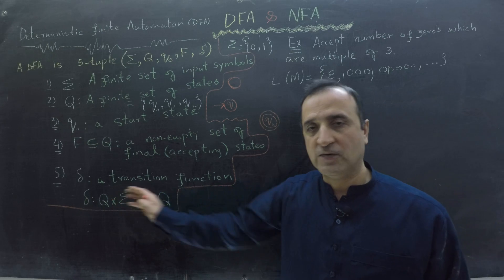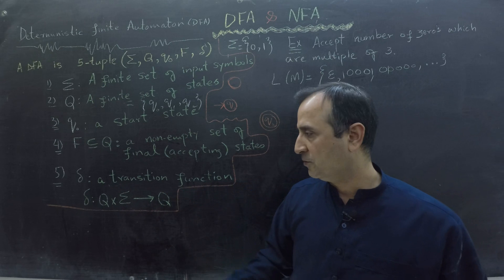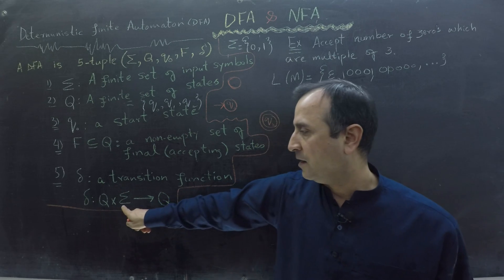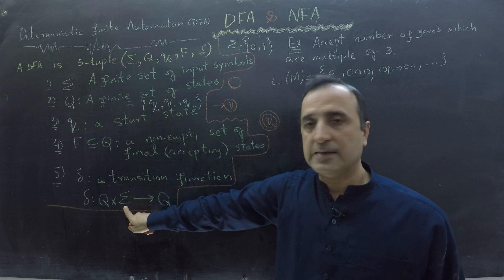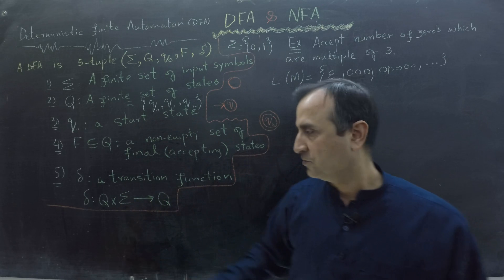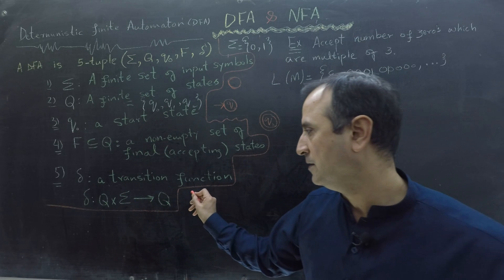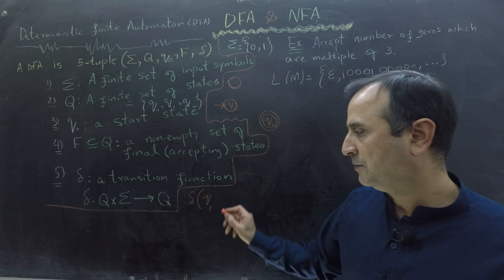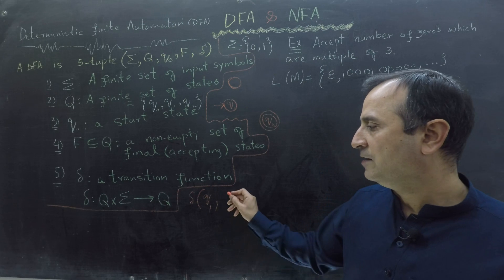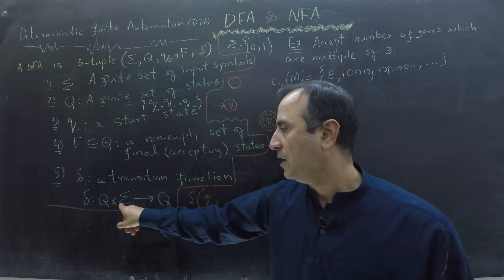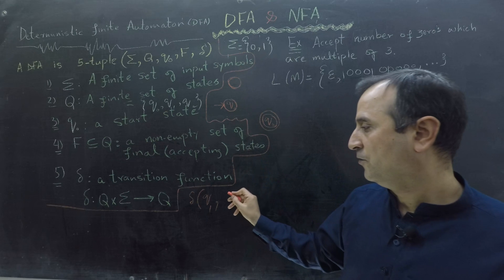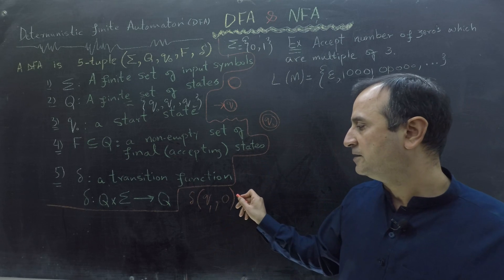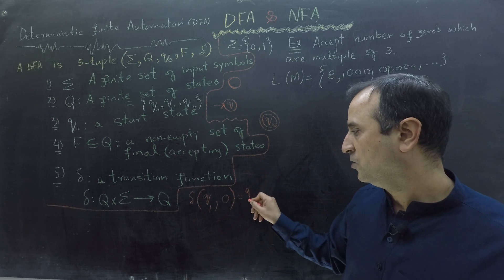Finally, we must have a transition function. The transition function takes two inputs: an input state and an input symbol, and then it outputs another state. For example, it takes state Q1 and input symbol 0, and outputs another state, say Q2.